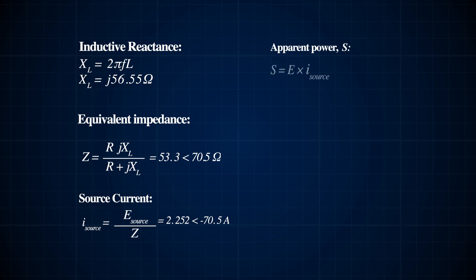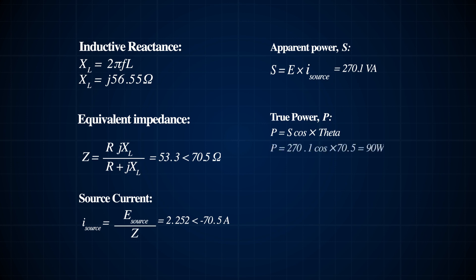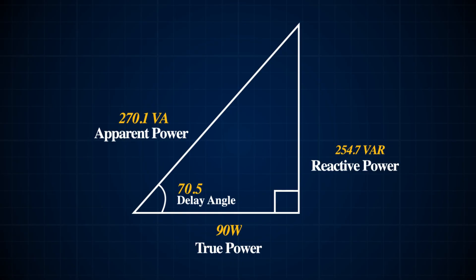The apparent power S is E times the current, which gives us 270.1 volt-amps. Now that we have found the apparent power, we can use the power triangle to find both the reactive power and true power. Using trigonometry, P equals S cos theta, where theta is the phase angle of 70.5 and S is 270.1. The result is 90 watts. The reactive power Q is given as S sine theta, and the result is 254.7 VAR. This is what the power triangle for this circuit would look like.